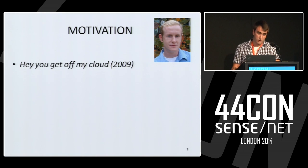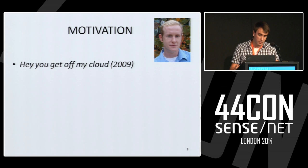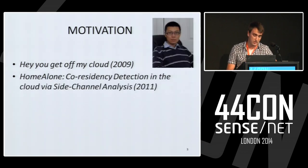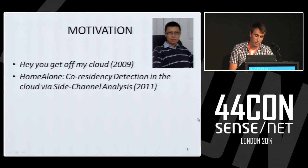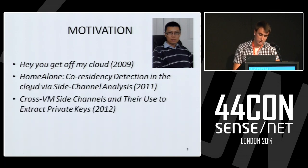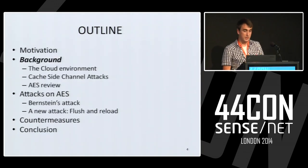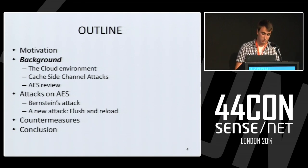Since we're working on side-channel attacks, we focus on hardware leakage. Since the cloud is based on sharing resources among multiple users, if two virtual machines use the same hardware, we want to know if shared hardware leaks information to an attacker trying to infer a key. Previous publications motivated us, for example 'Hey, you've got my cloud' by Ristenpart et al., which demonstrated co-locating an attacker's VM with a victim's VM on a public cloud to share hardware. Another paper, 'Home Alone' by Zhang et al., used side-channel techniques to detect co-location and recover an ElGamal encryption key across Xen VMs using Prime+Probe.